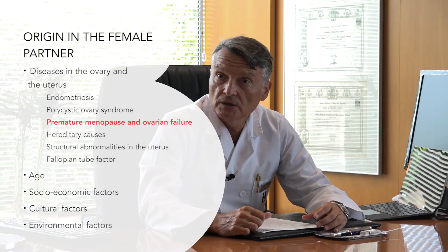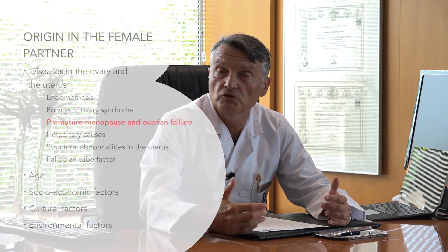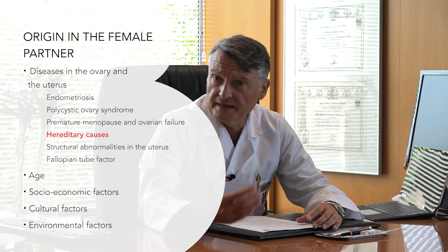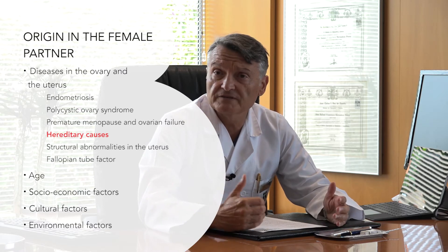Another frequent cause in women are ovulatory disorders. The ovary needs to release an egg periodically so that the egg can be fertilized and pregnancy can begin. Many women, however, only ovulate sporadically, or simply do not ovulate at all. There are also hereditary reasons, including Turner syndrome and other diseases, that mean women are born with a decreased ability or total inability to conceive.